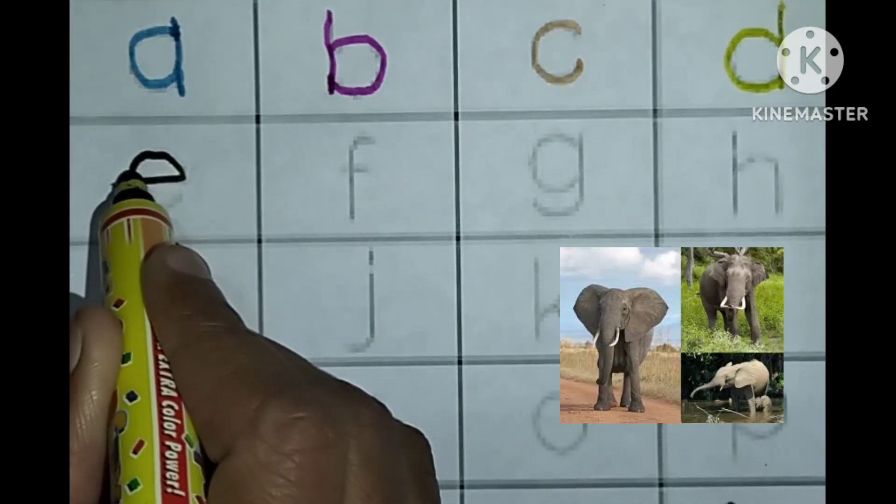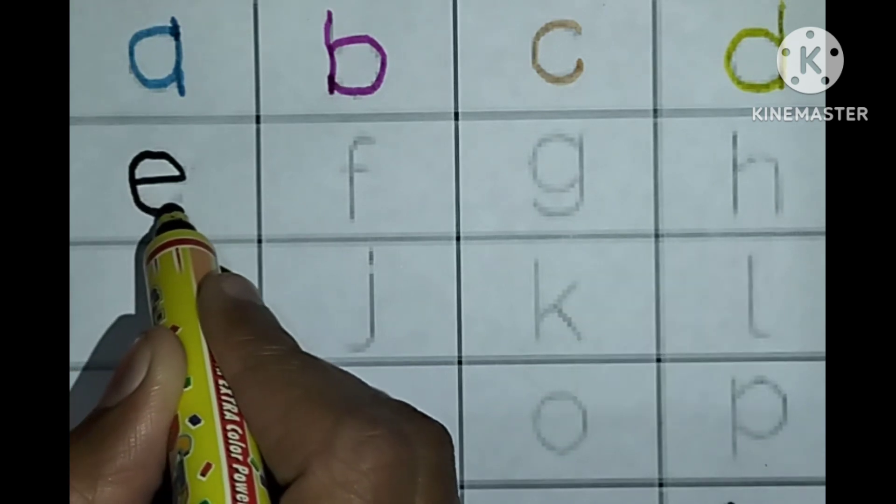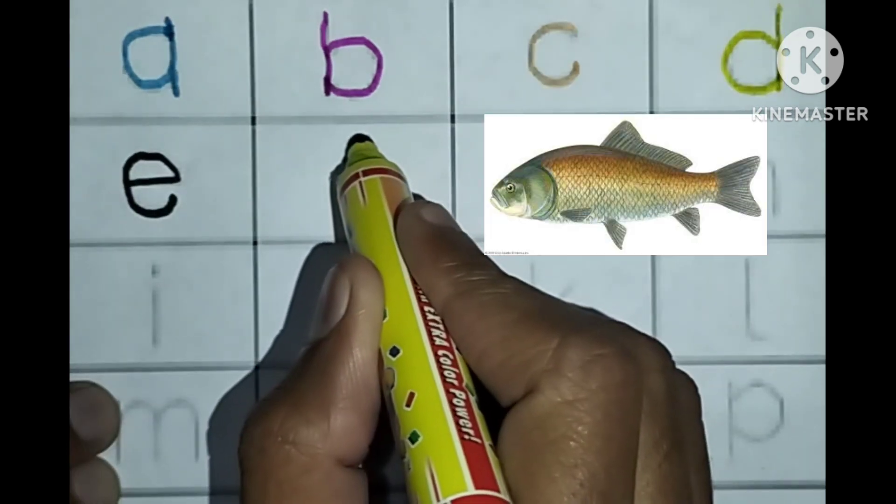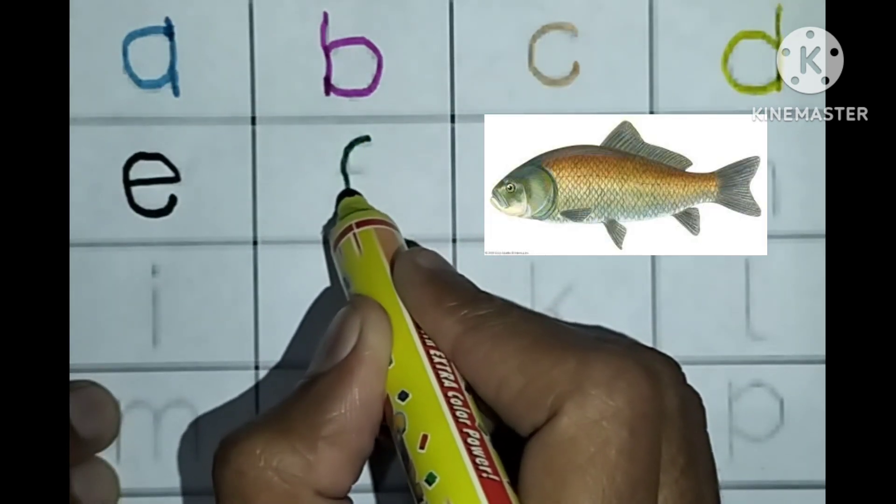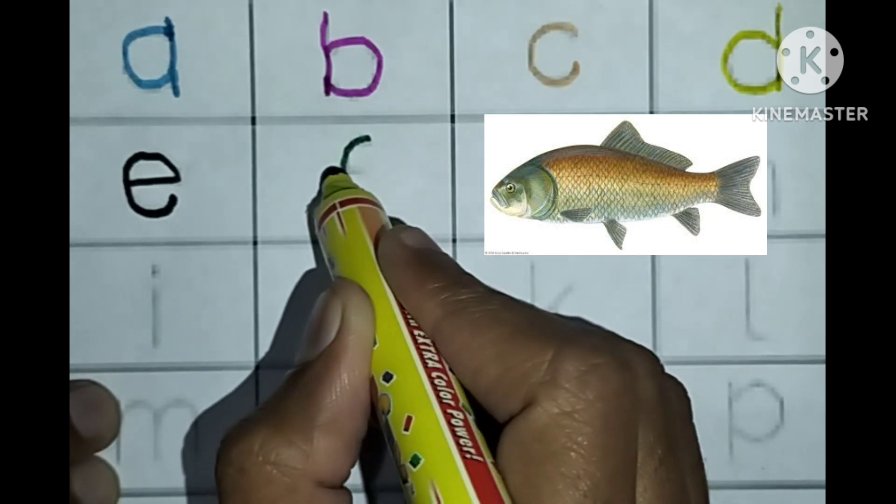E for elephant, E for elephant. F. F for piece, F for piece.